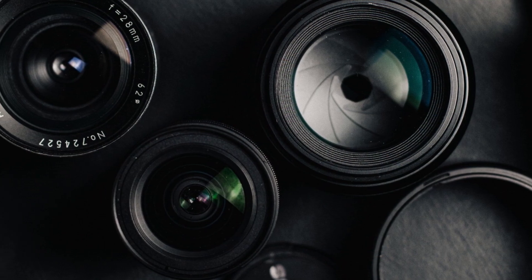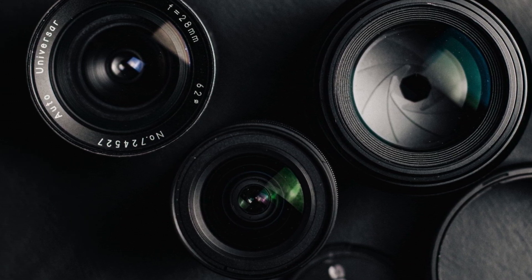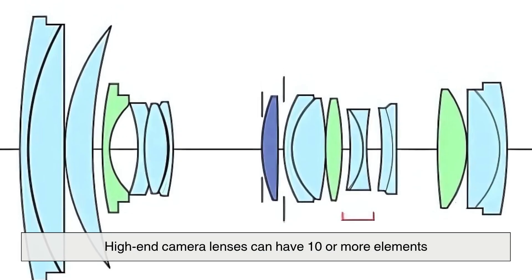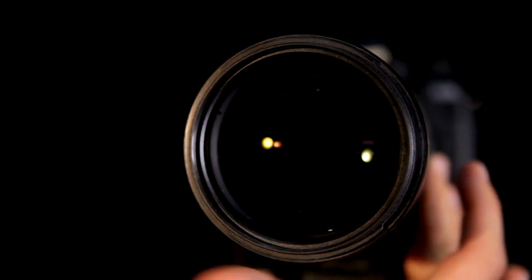The pieces must be perfectly aligned or the final photo won't be clear. High-end camera lenses can have ten or more elements, all hand-checked and carefully put together.